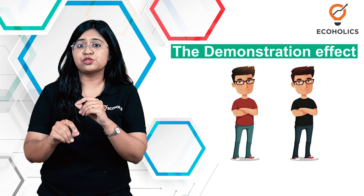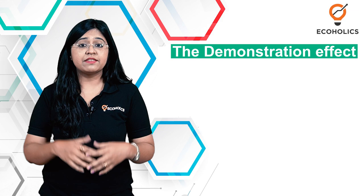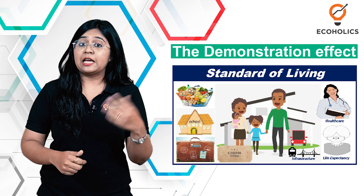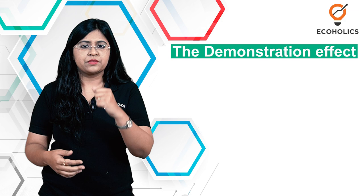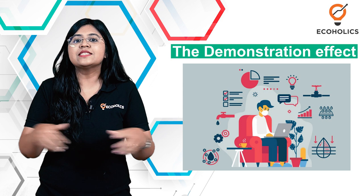they start increasing their consumption expenditure — like buying a new car, a house, a bike, new furniture, and adopting new lifestyles. Looking at this, the remaining individuals in the society also try to adopt this affluence in their own little ways.